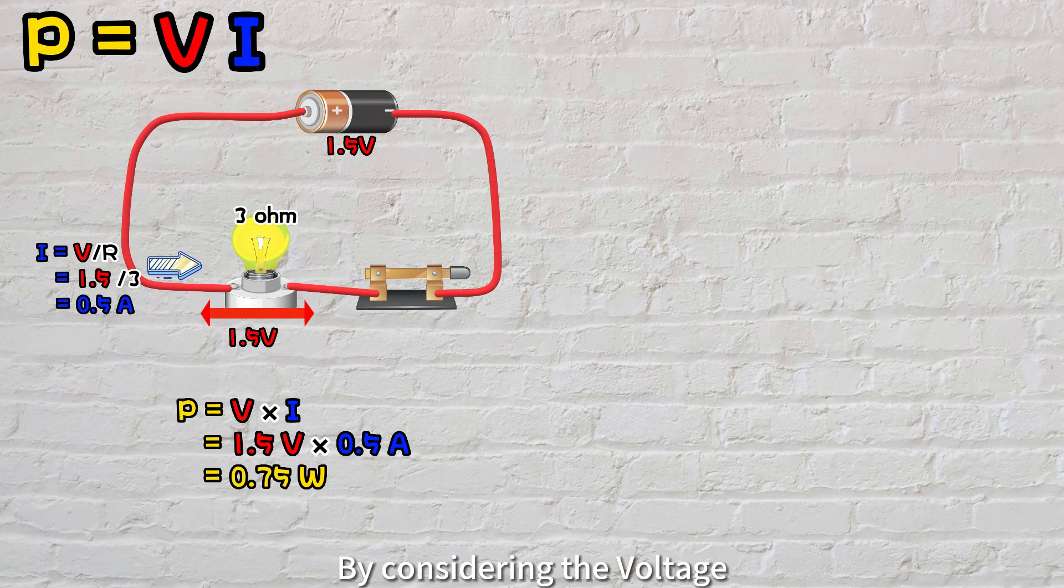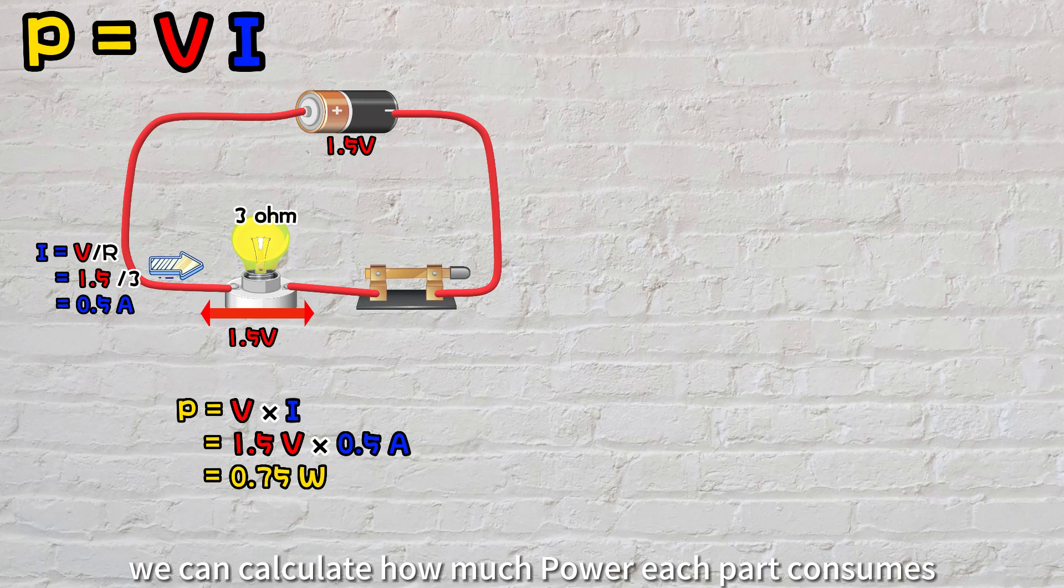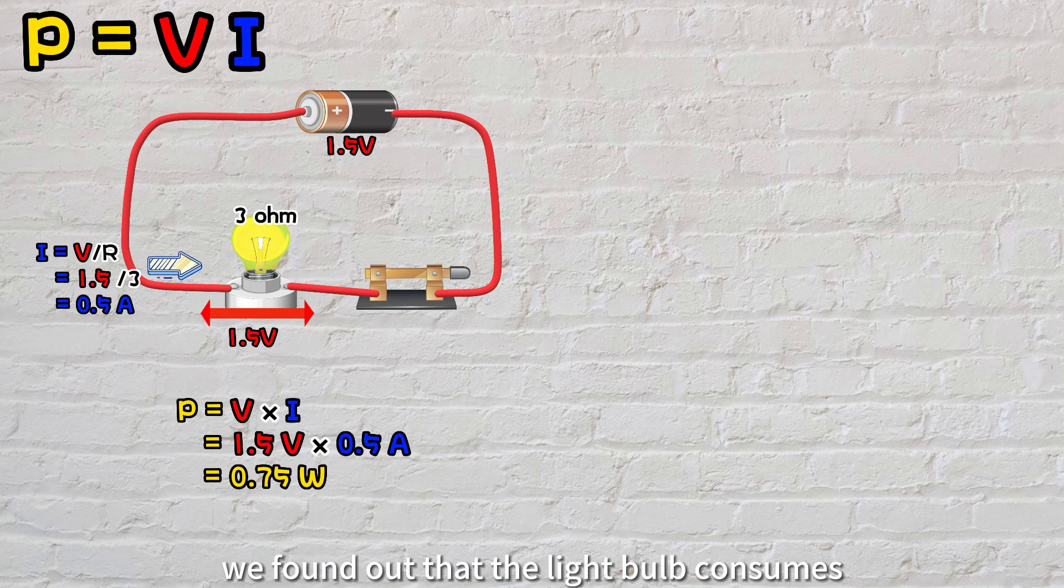By considering the voltage and current across each component, we can calculate how much power each part consumes. In the earlier example, we found out that the light bulb consumes 0.75 watts of power.